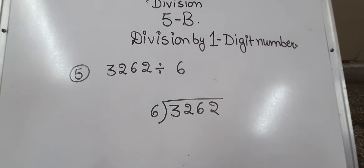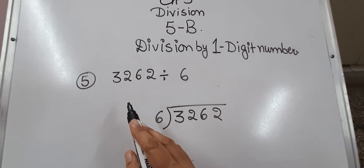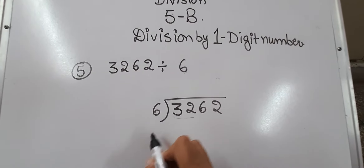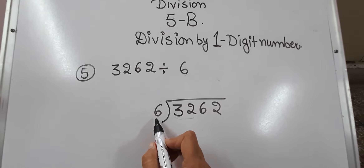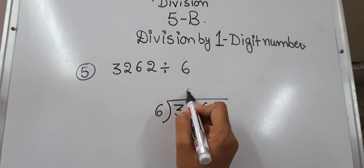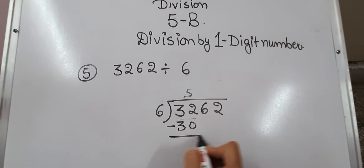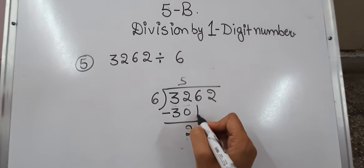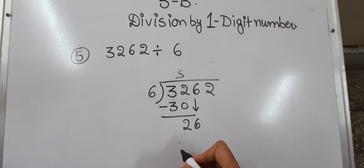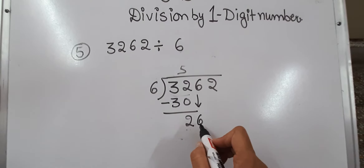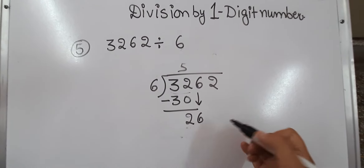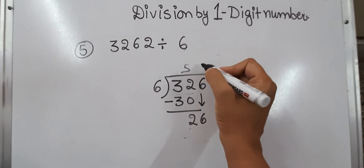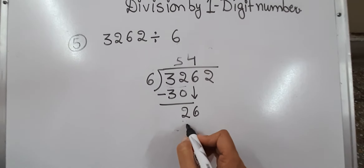Now the next one: 3262 divided by 6. We will take 32 together. 6×5 is 30. We subtract and get 2. We put 6 down. Now 6×4 is 24, which is just smaller than 26. So we write 6×4 is 24.